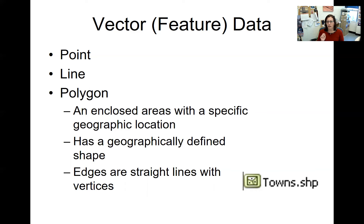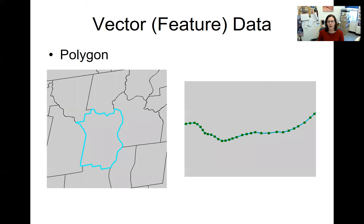Polygons are enclosed spaces. Just like points and lines, they have specific geographic locations — they're built on vertices, which are points with specific geographic locations. What a polygon has that lines and points don't is area: it has a shape defined. So you can measure area and shape associated with polygons. To get to a line you need at least two points; to get to a polygon you need at least three points and lines connecting them to define a shape.